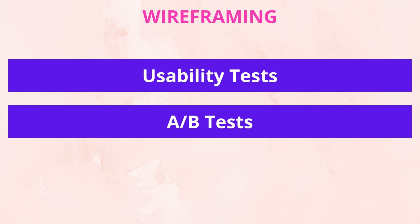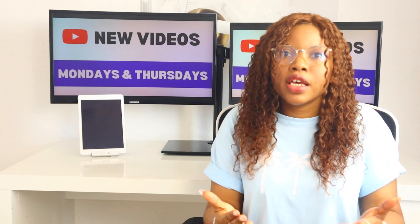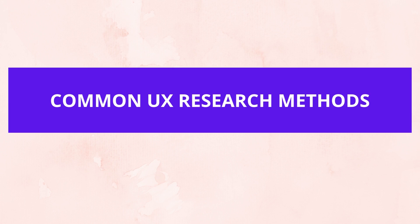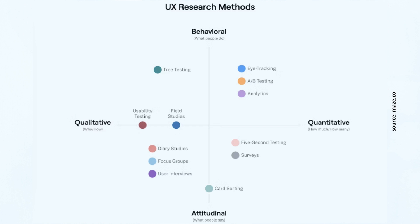Now let's talk about common UX research methods. This visual from Maze explains this perfectly. Basically, we have two research categories: quantitative and qualitative research methods. These can be grouped based on what users say and what they do — which is often contradicting, believe me.